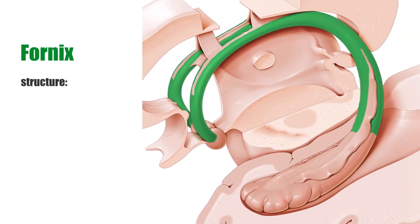The fornix is a C-shaped bundle of nerve fibers extending from the hippocampus to the mammillary bodies of the hypothalamus and the anterior nuclei of the thalamus, forming an arch over the thalamus.